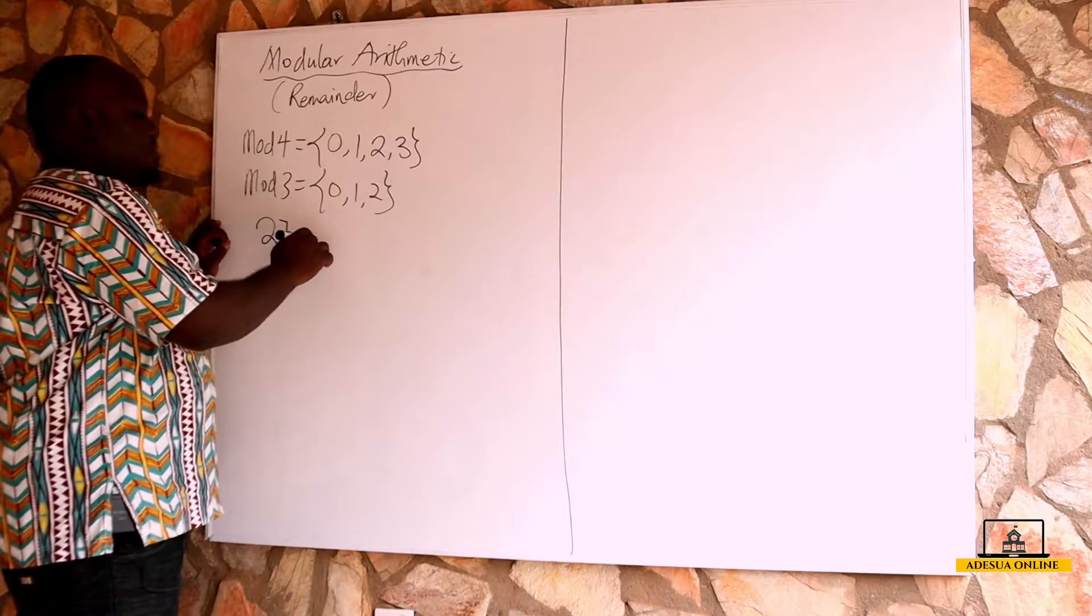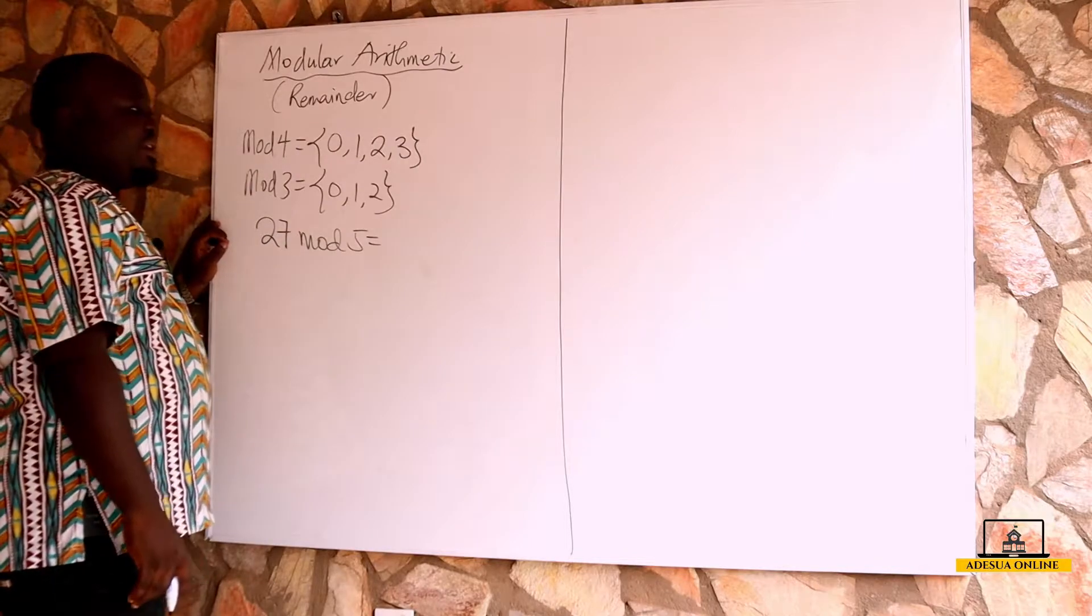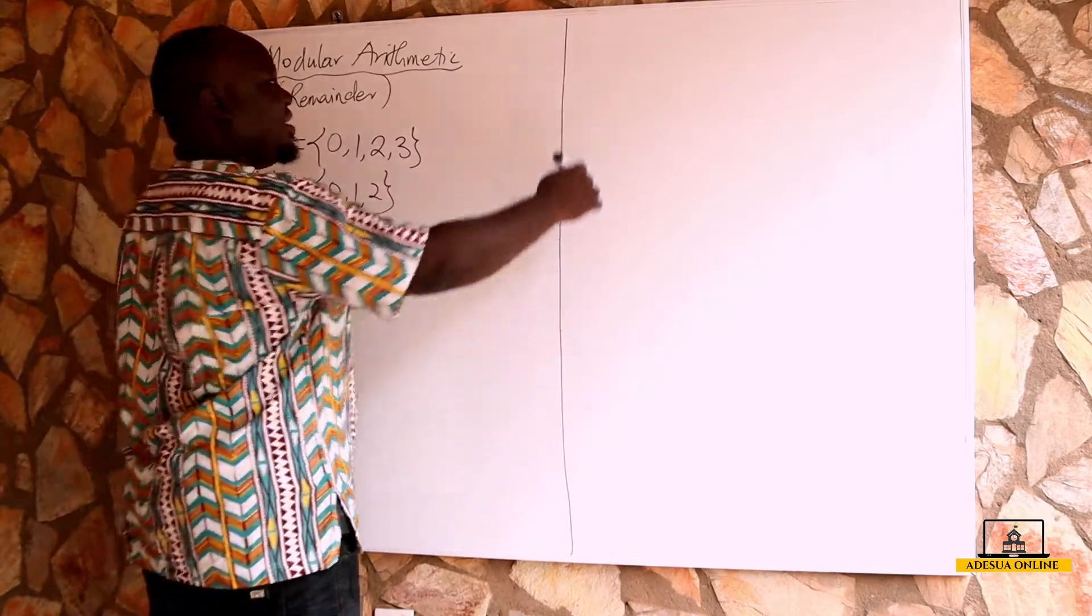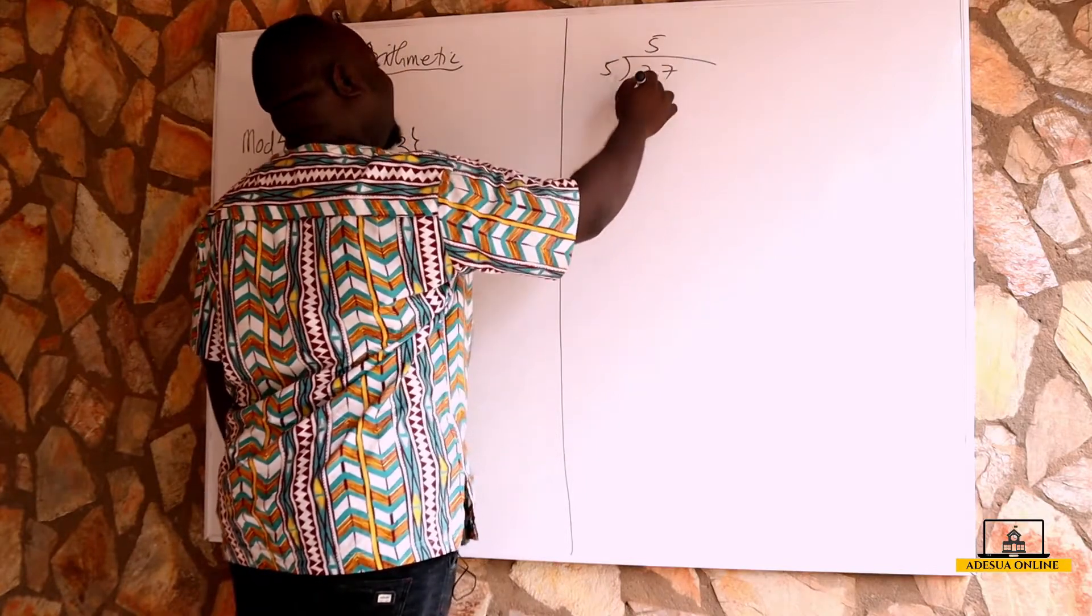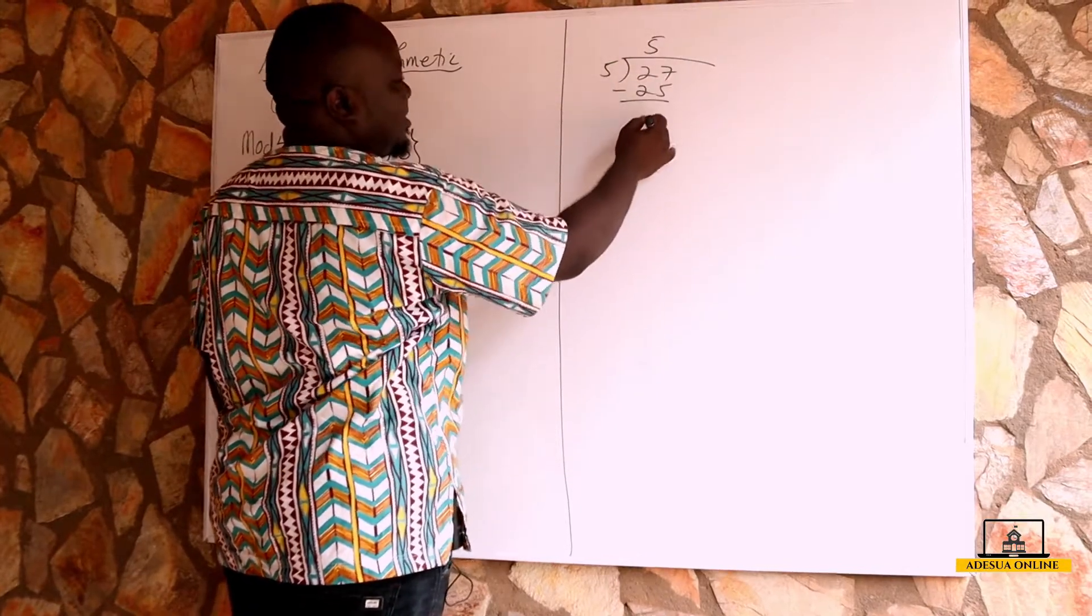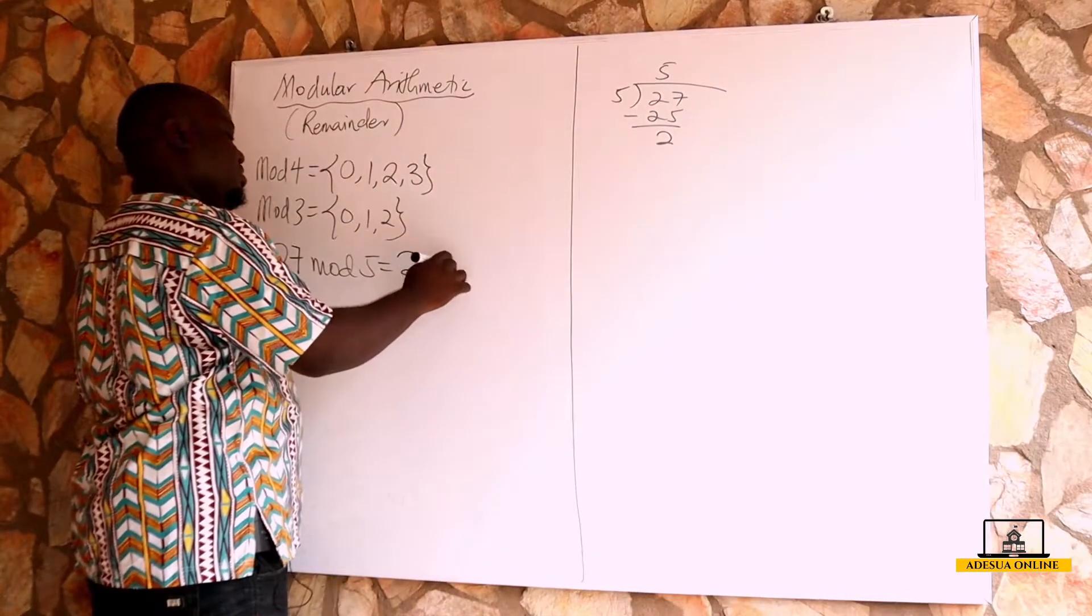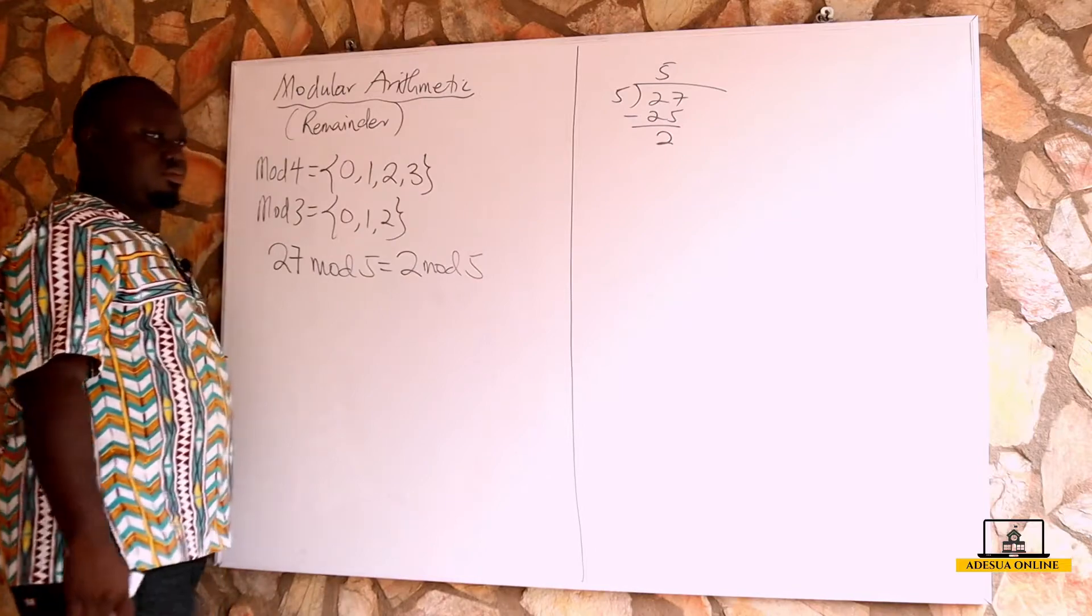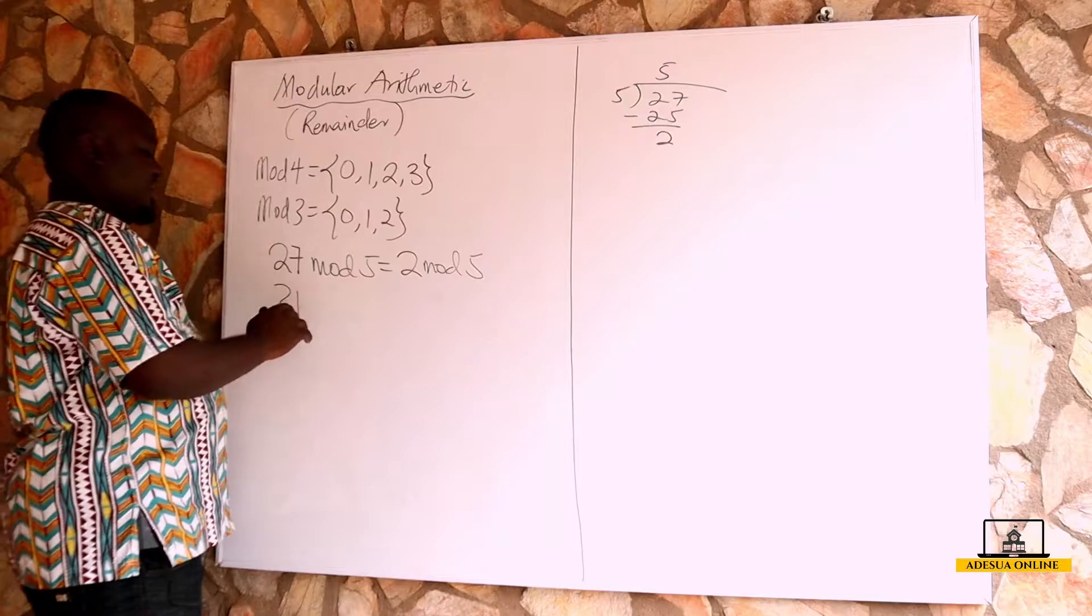So if I have, let's say, 27 modulo 5. If I should divide 27 by 5, I need to get a remainder. If you divide this, 5 times 5 is 25, and you subtract to get a remainder of 2. So this is equal to 2 mod 5.